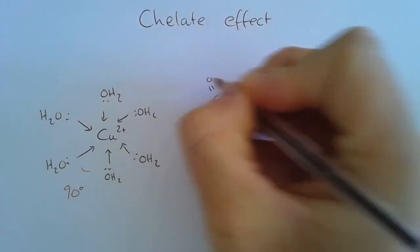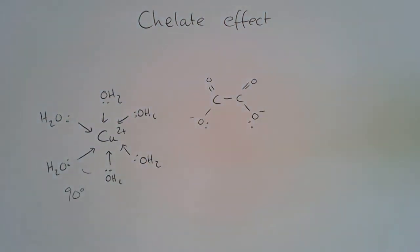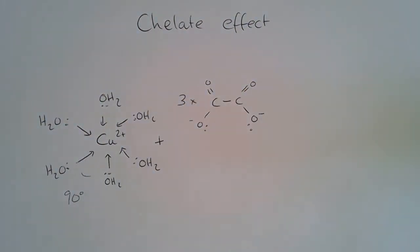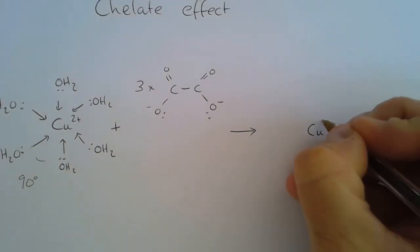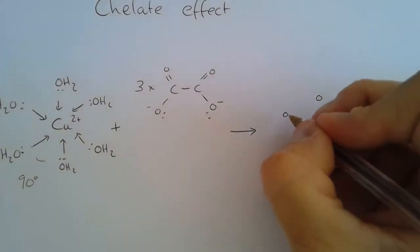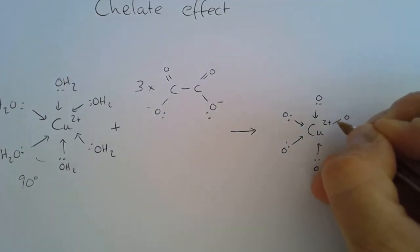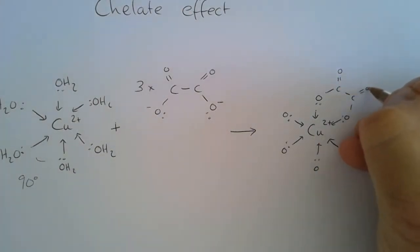Now let's think about the ethane dioate ligand — a bidentate ligand, which means each ligand is able to form two dative covalent bonds to the transition metal ion. If we react the hexaaqua complex with at least three equivalents of ethane dioate, we form a new complex. I'll draw the oxygen atoms that form the dative covalent bonds first, then fill in the rest of the structure — which is negatively charged.